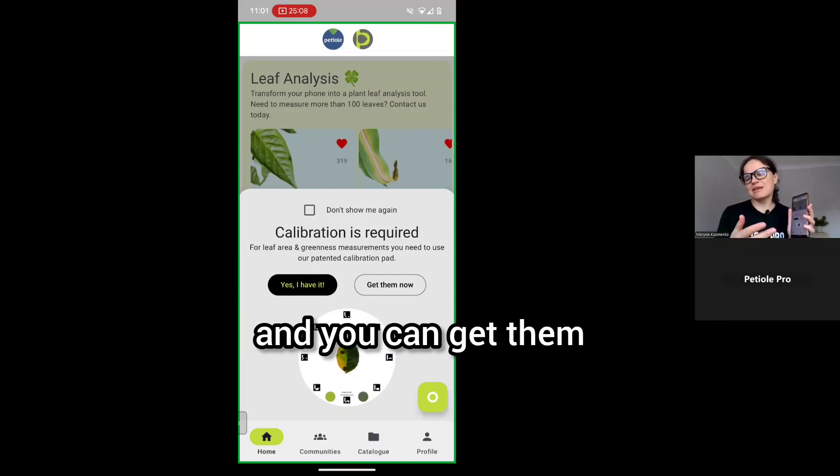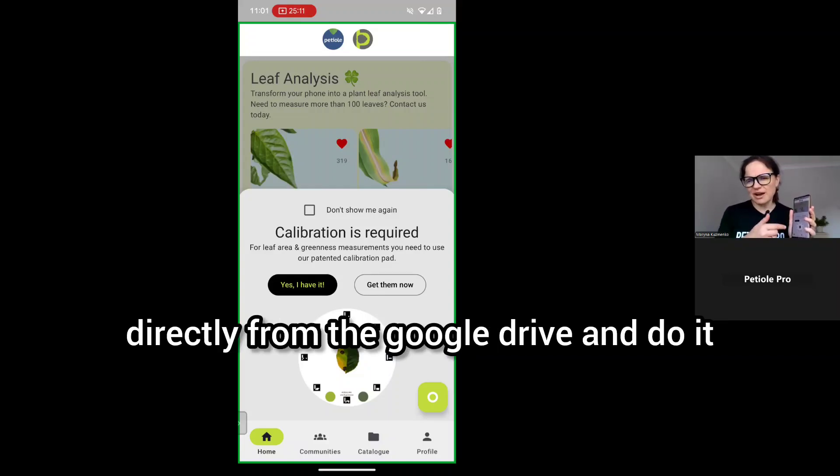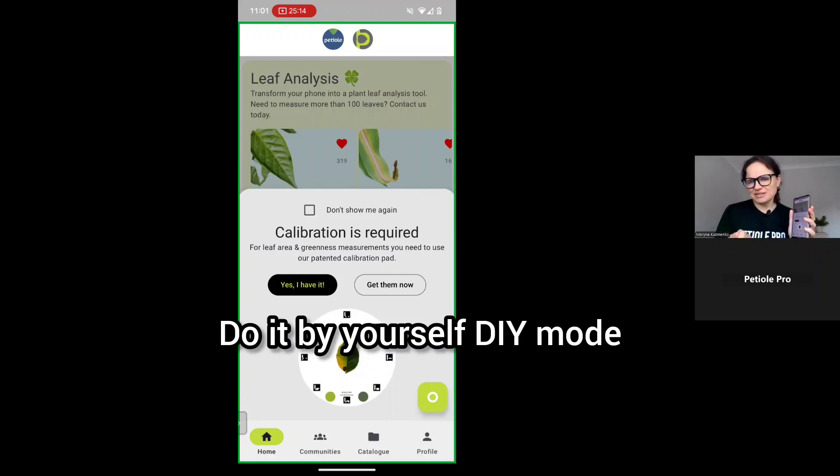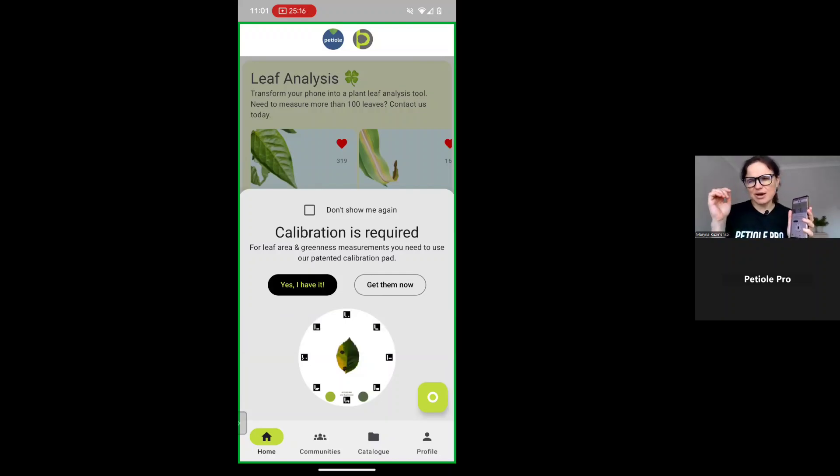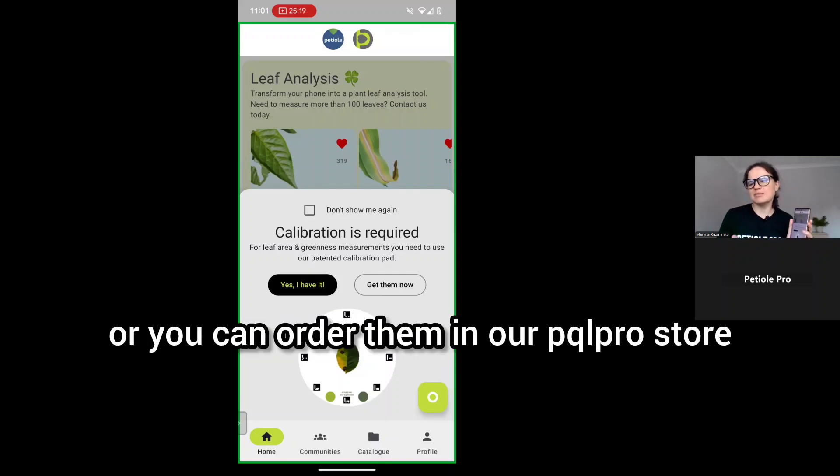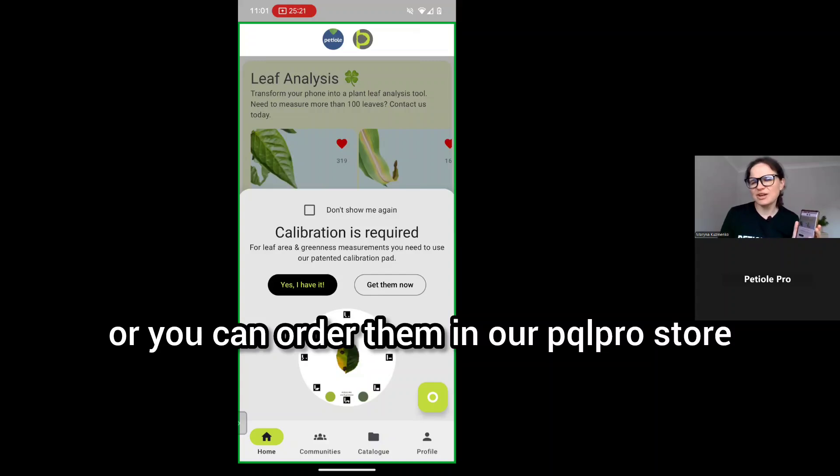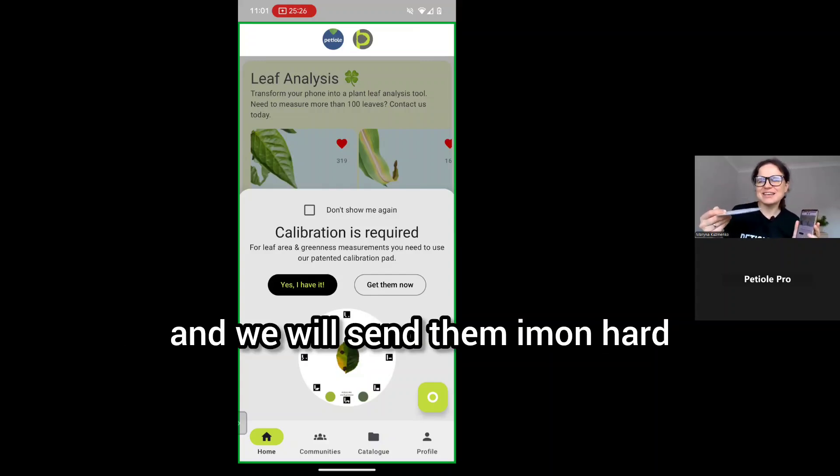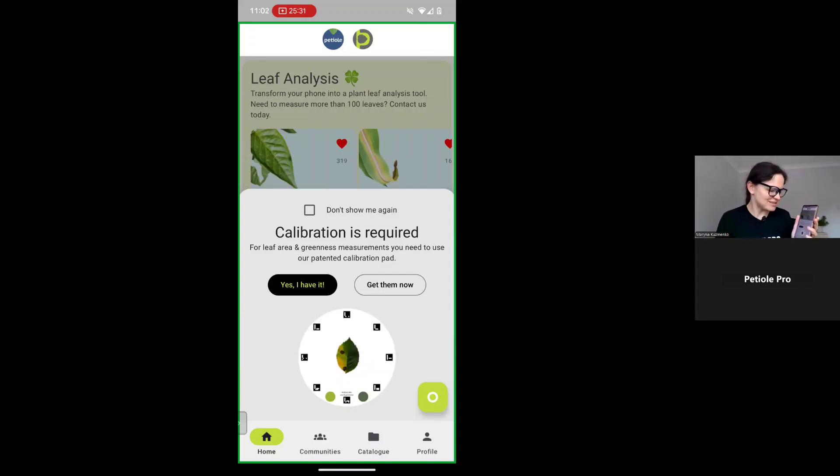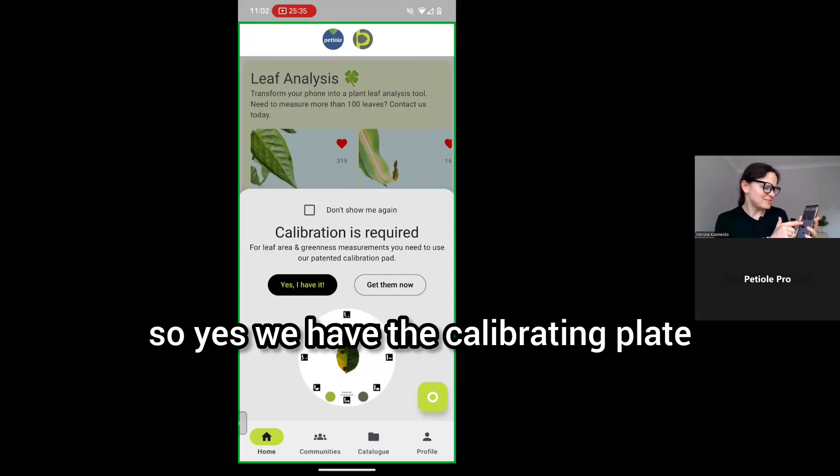We already have them. You can get them either directly from the Google Drive in do-it-yourself mode, or you can order them in our PTL Pro store and we will send them in hard basis, acrylic basis, so it will be more convenient for use. It's up to you.